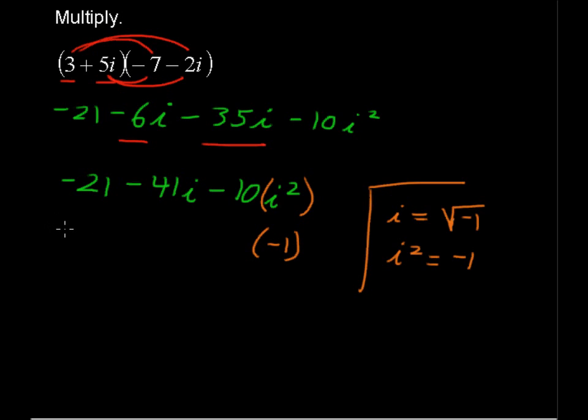I'm going to rewrite the rest of the problem. Negative 21 minus 41i minus 10 times negative 1. Negative 10 times negative 1 gives us a positive 10. So, negative 21 plus 10 minus 41i.